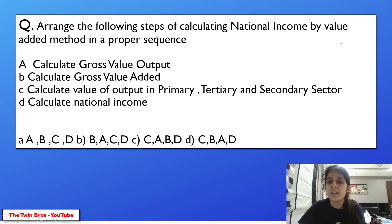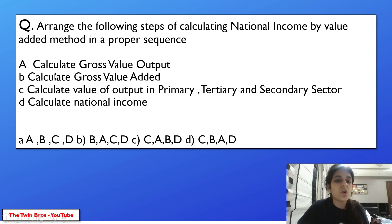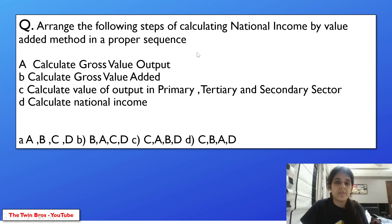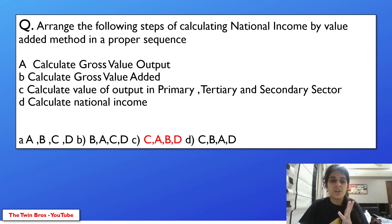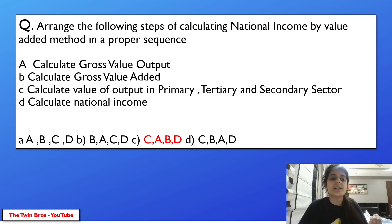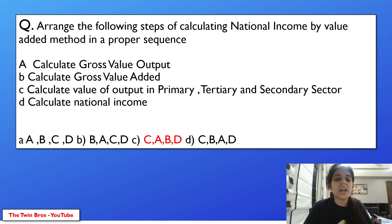Arrange the following steps of calculating national income by value-added method in proper sequence: calculate value of output in primary, tertiary, and secondary sector; calculate gross value added; calculate national income. The correct sequence is C, A, B, D. First, calculate the value of output from the three sectors — primary, secondary, and tertiary. Then calculate gross value added. Finally, calculate national income.